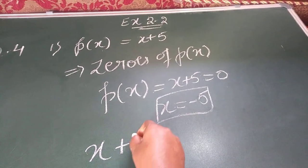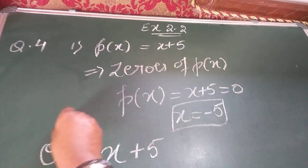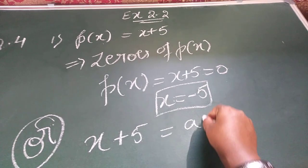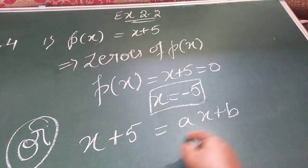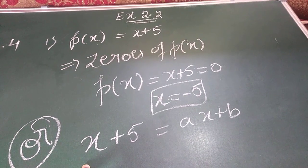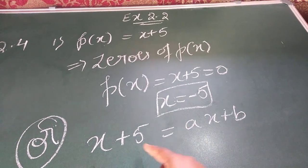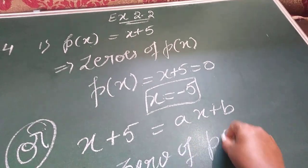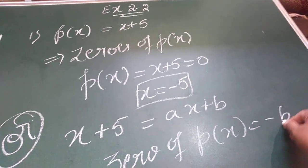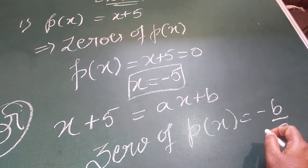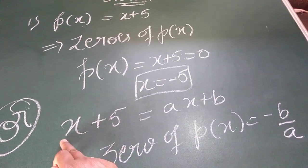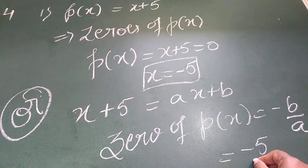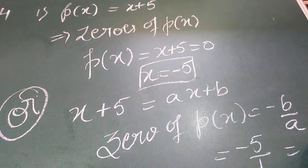We know the general form of linear equation. This is an alternate solution, children. Now, x plus 5 is equal to Ax plus B. On comparing both sides, A value is 1, B value is 5. Hence, zero of P(x) is equal to minus B by A. Minus B means you should take minus 5. A is 1. No number means that is 1. Hence, your solution is minus 5 by 1 or simply minus 5.